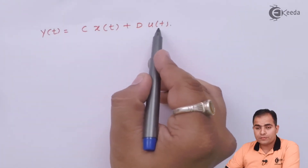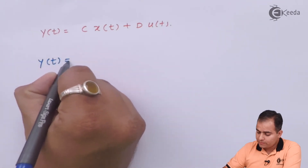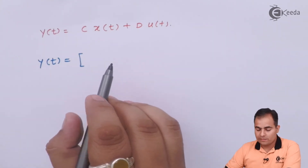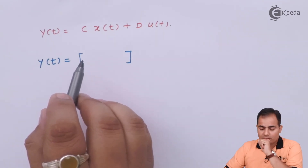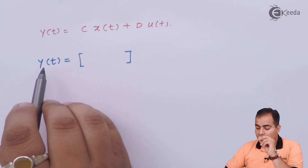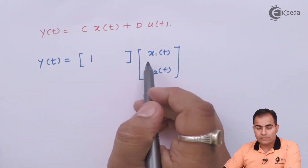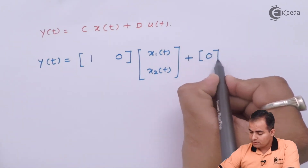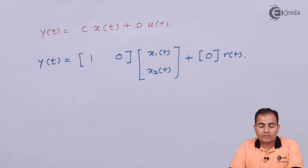Now we find the output state variable model. Here we place the normalized state variable values and substitute u(t) = r(t). The output equation is y(t) = C·[x1(t); x2(t)] + D·r(t). From the equation y(t) = x1(t), only the first state variable appears: the coefficient of x1(t) is 1, and the coefficient of x2(t) is 0. The r(t) value is also 0. So the output state variable model is obtained.